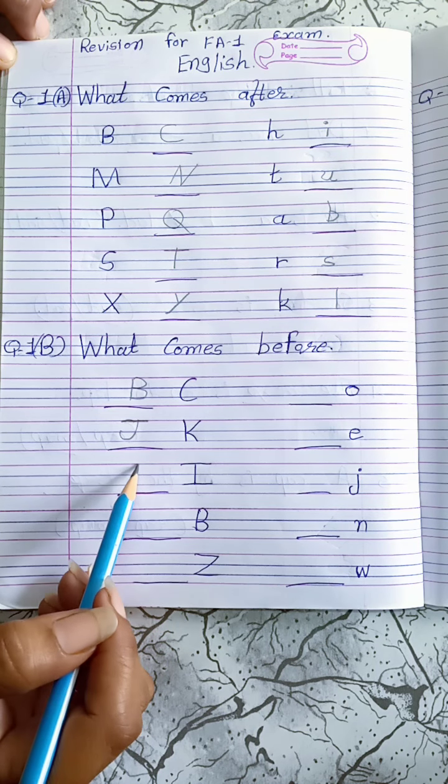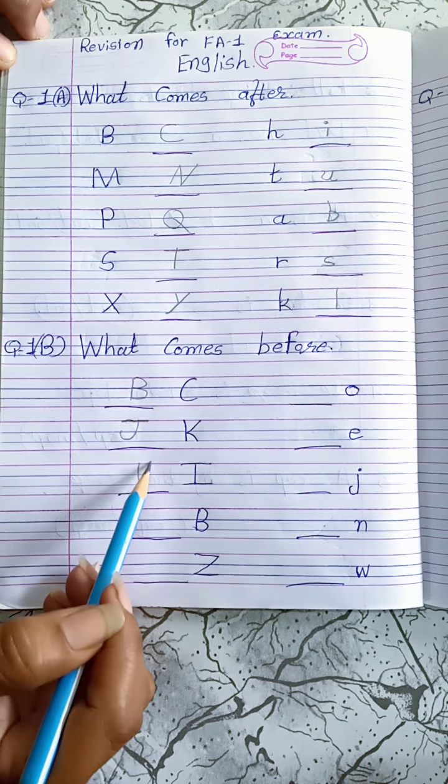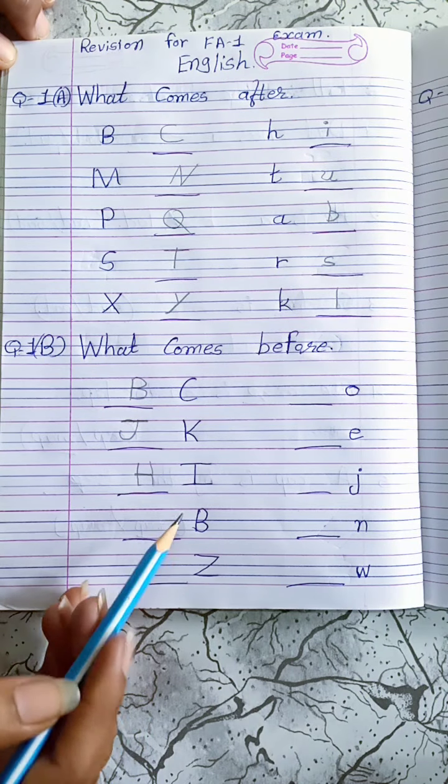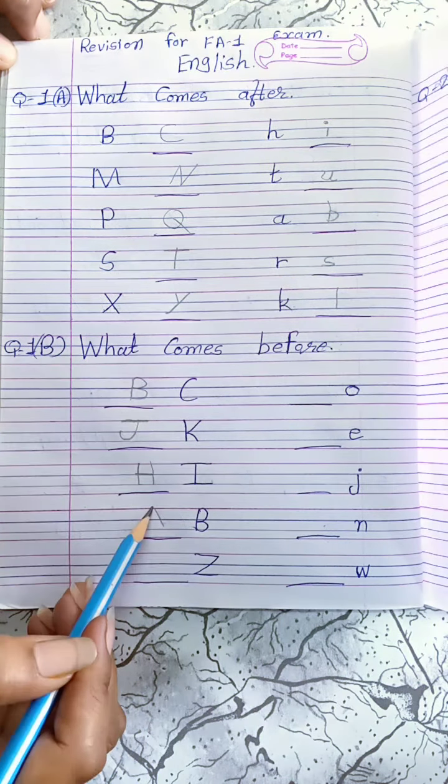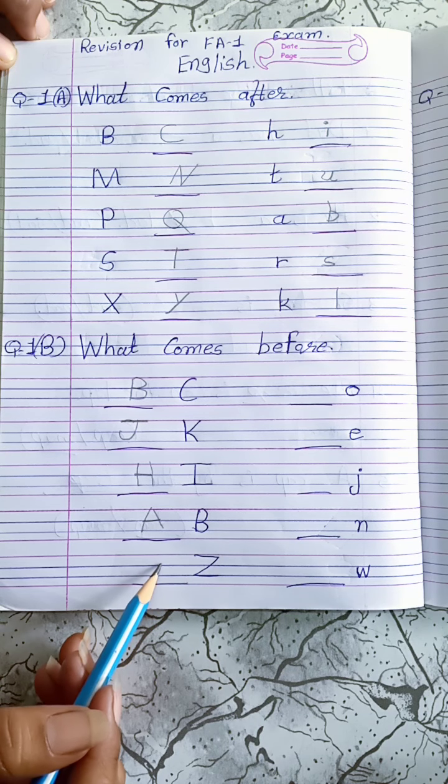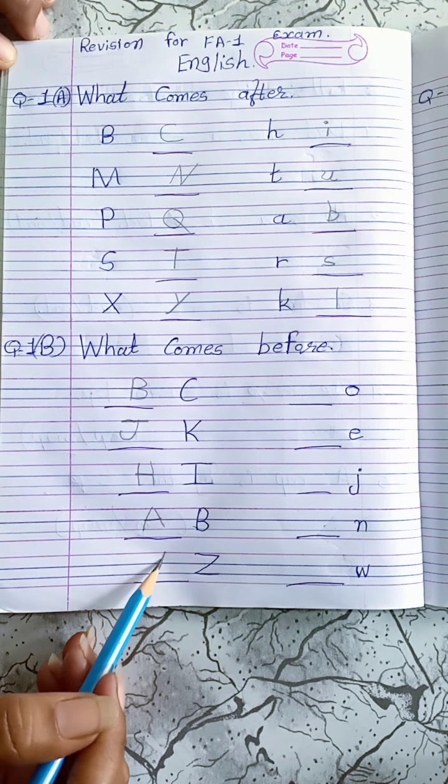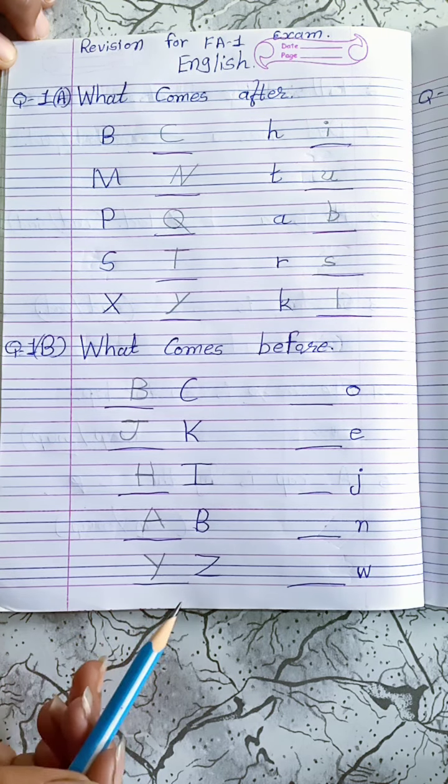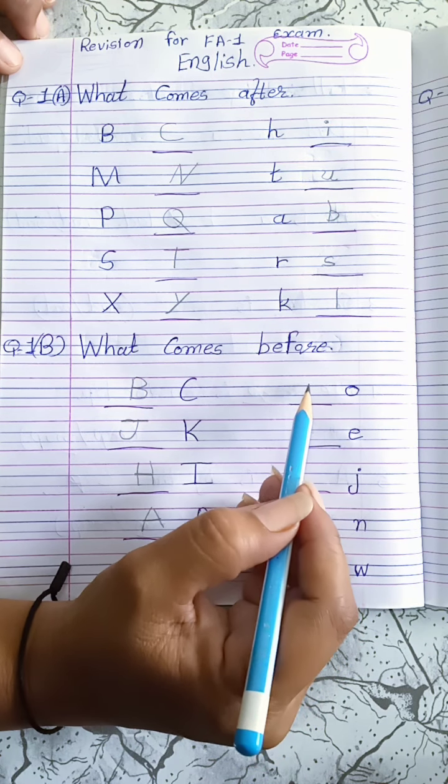What comes before I? H. What comes before B? A. What comes before Z? Y. What comes before O? N.